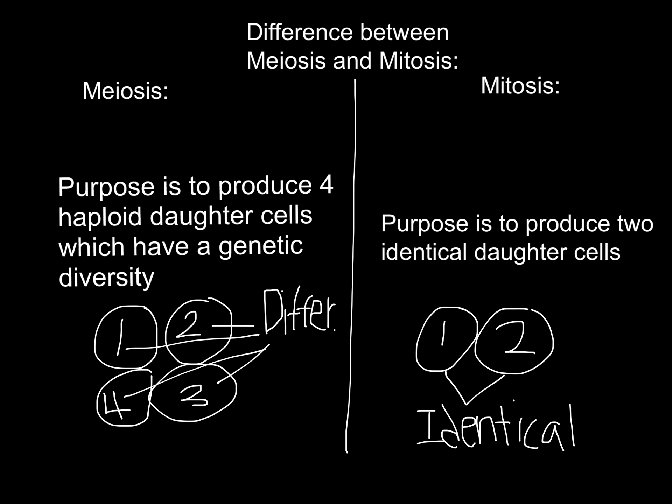The second thing I want to mention is the difference between meiosis and mitosis. In meiosis, the purpose is to produce four haploid daughter cells which have genetic diversity. In mitosis, the purpose is to produce two identical daughter cells, as you can see over here.